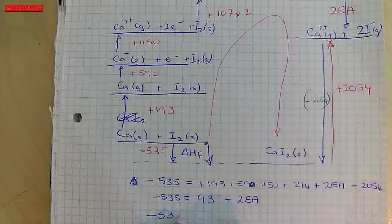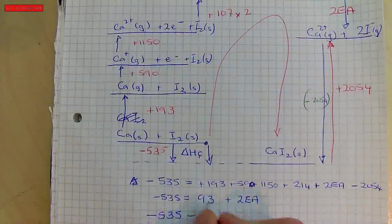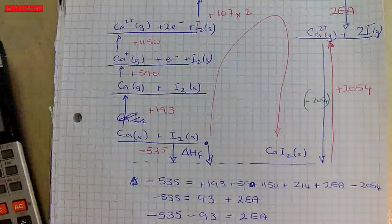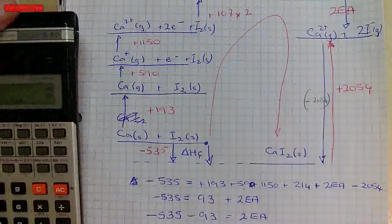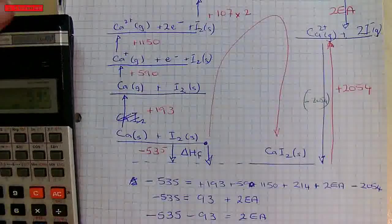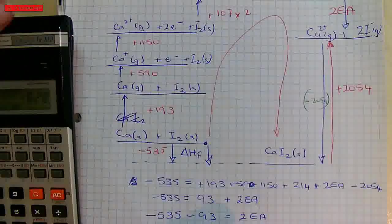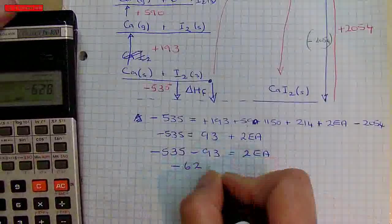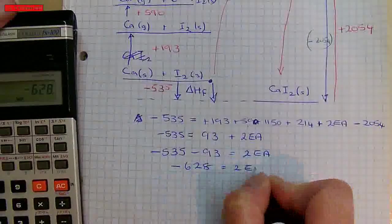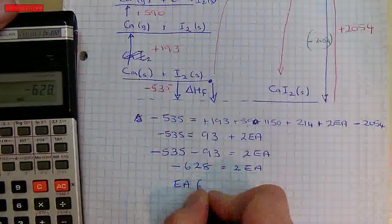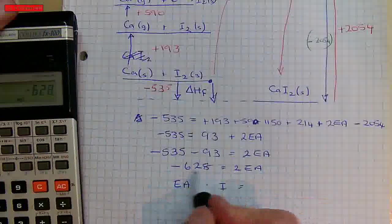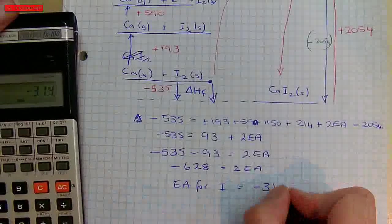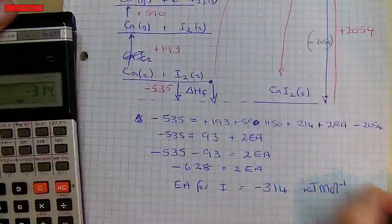So if I again rearrange this equation, so negative 535, take away 93 equals 2Ea. I'm just going to do that on my calculator. So 535 is negative, take away 93 equals, so this is minus 628 equals 2 electron affinities. So the first electron affinity for iodine is minus 628 divided by 2. So I'll divide that by 2 is minus 314 kilojoules per mole.